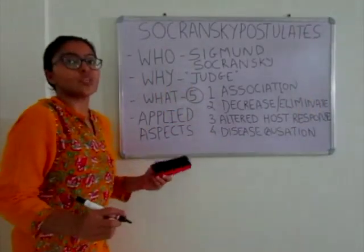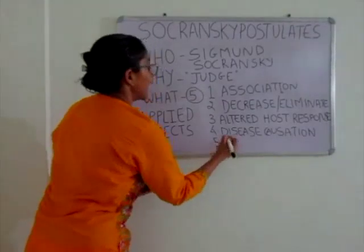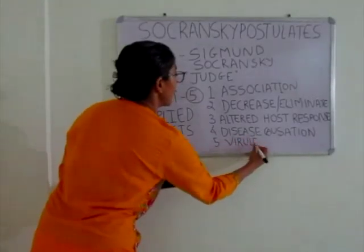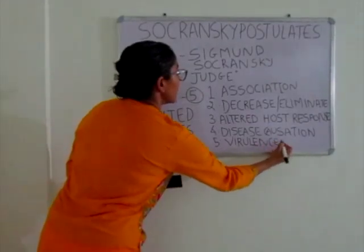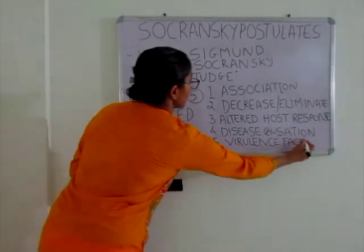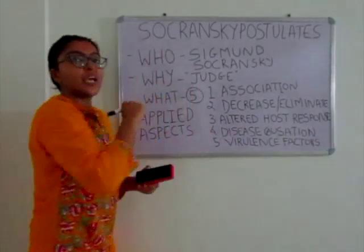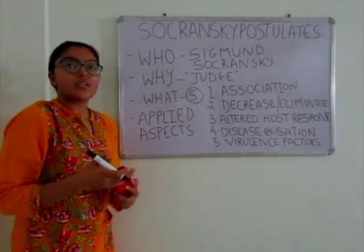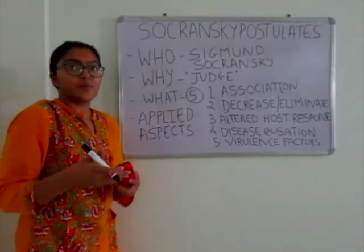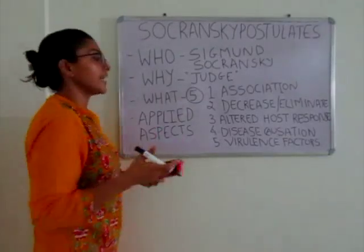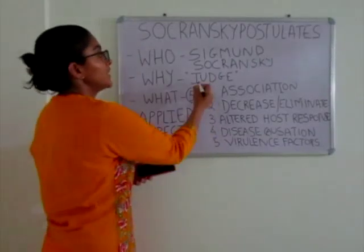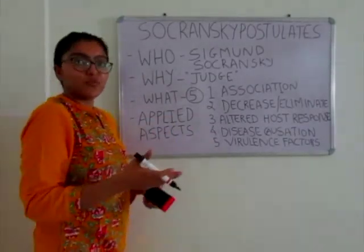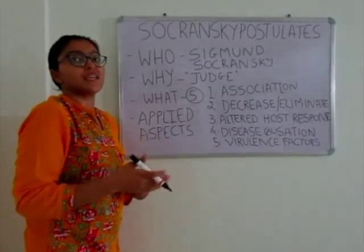And the 5th and most important postulate: demonstration of virulence factors. Virulence factors are synonymous to the weapons of a microorganism. The microorganism must demonstrate such virulence factors with the help of which they mediate tissue destruction and can clearly manifest as disease. For example, a leukotoxin by Aggregatibacter actinomycetemcomitans, lipopolysaccharide by Porphyromonas gingivalis, and gingipains. These are examples of virulence factors that a microorganism possesses.